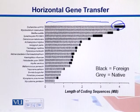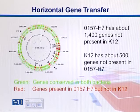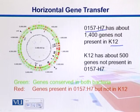Synecococcystis also has a huge proportion of foreign genes. Here is another case showing a comparative map of two genomes from E. coli O157H7 and K12. We see here that there are about 1400 genes present in H7 which are not present in K12.